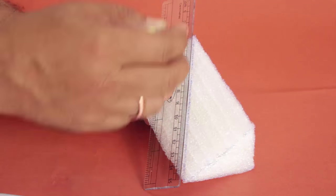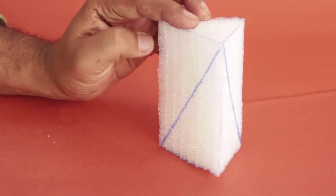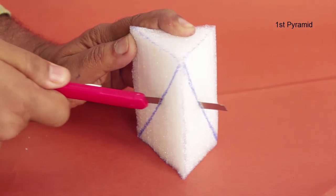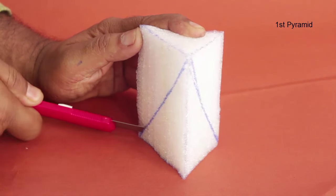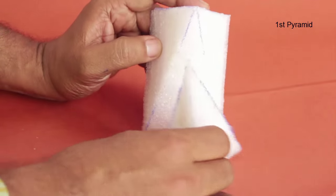And now we will cut this prism into three triangular pyramids. First we cut along this edge so we get this first pyramid and we mark the newly cut triangular face as A.